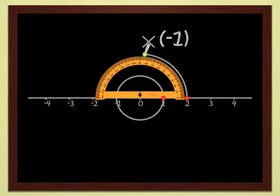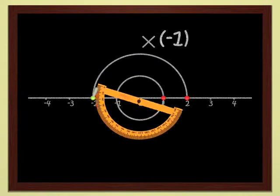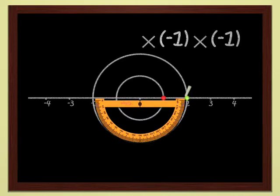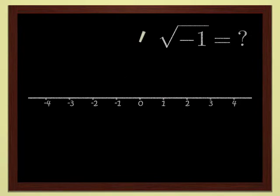You see, for instance, that multiplication by minus one sends two to minus two. And that if you multiply one more time by minus one, you come back to two. Obvious, isn't it? Therefore, there is no number which, multiplied by itself, yields minus one. Another way of saying this is that minus one has no square root.